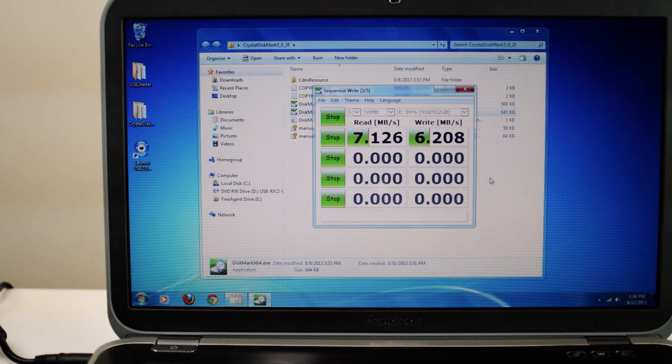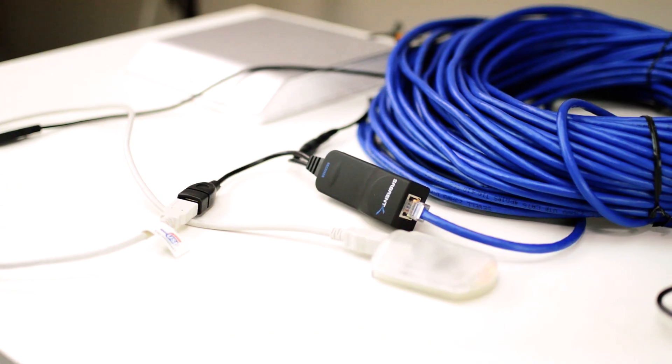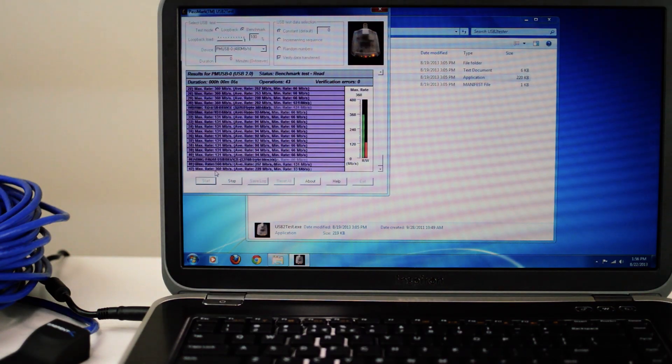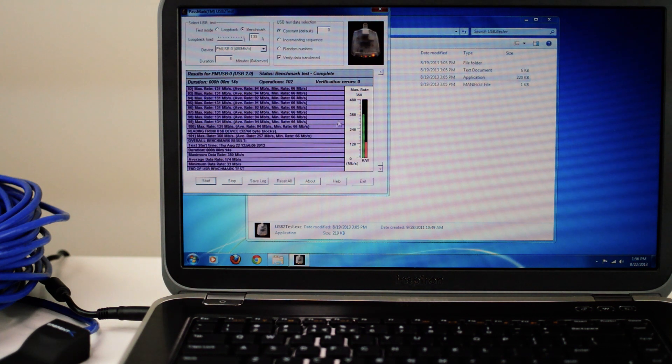Once it's done, we get a 7.126 megabytes per second read and 6.212 megabytes per second write. Now we switch to the Passmark tester. And after the test, we get a max rate of 360 megabits per second read and 131 megabits per second write, with an average data rate of 174 megabits per second.